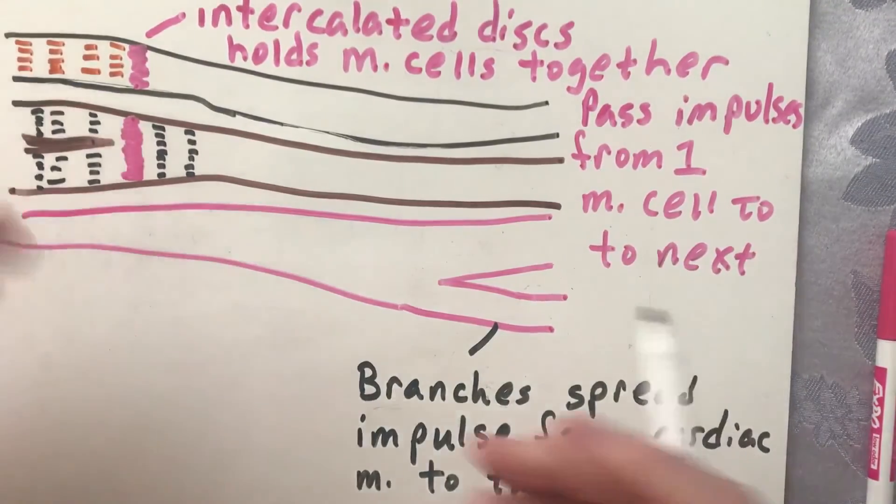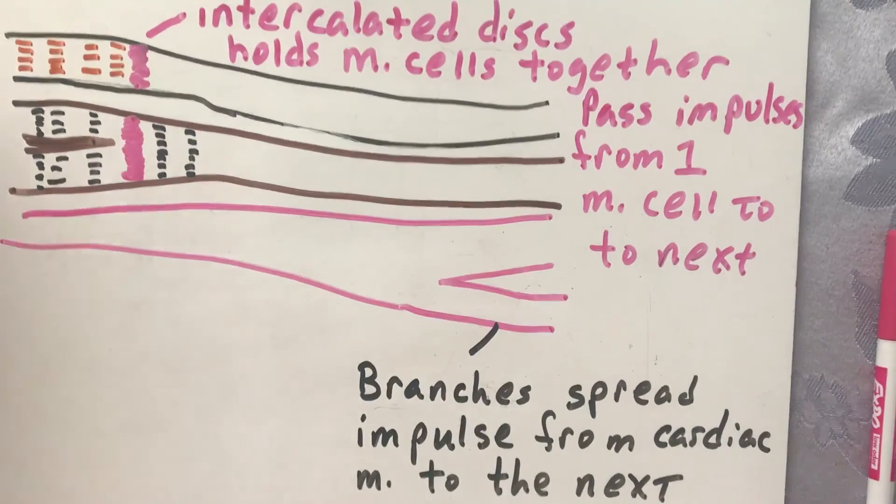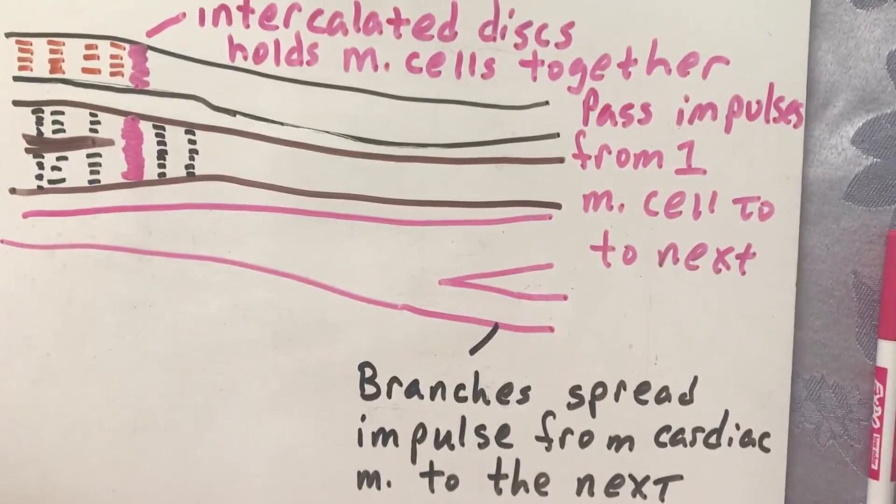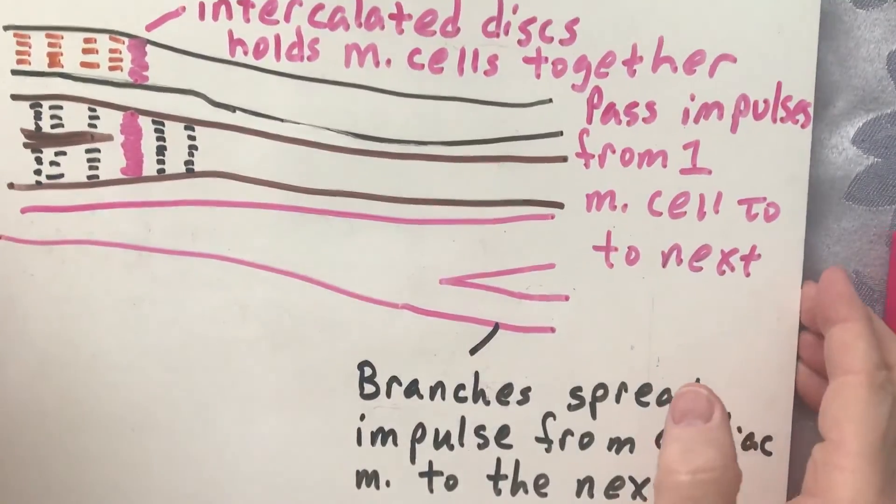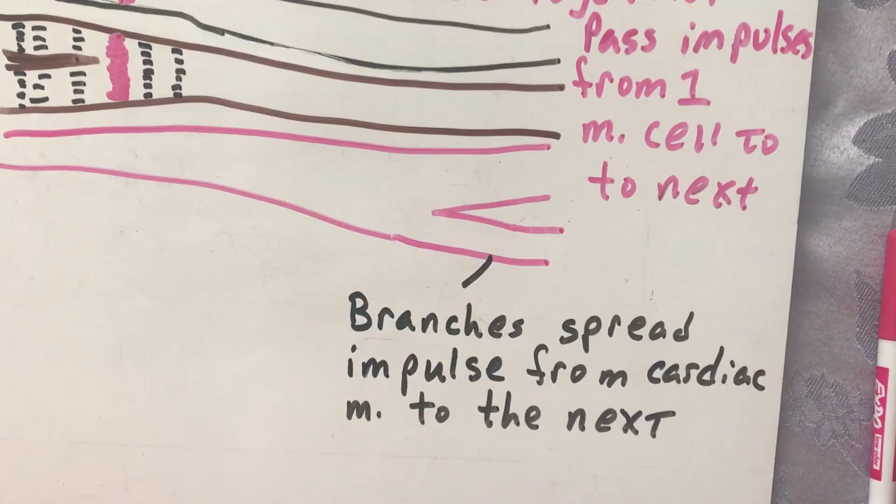So you can see we want to spread this around throughout the heart because the heart needs to be all at once. Well, when those parts do, I mean the atria contract all at once and then the ventricles contract all at once, which we've talked about before. So for the most part, that is our cardiac muscle.